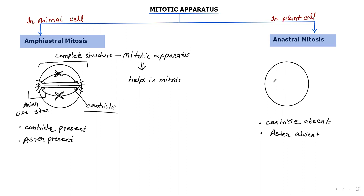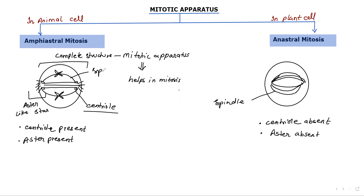Since the aster and centriole are absent in plant cells, only spindle formation occurs. The spindle is drawn without the aster. This spindle formation still takes place, and because the structure is spindle-shaped, it is called the spindle fiber.